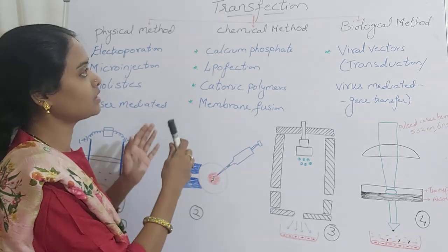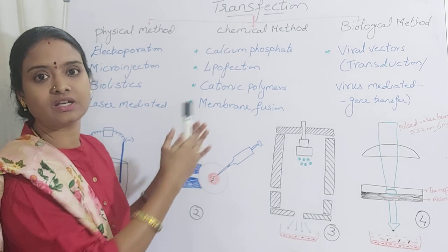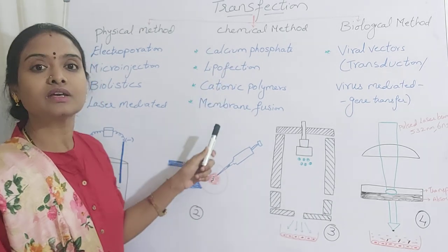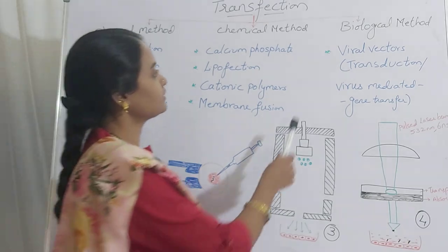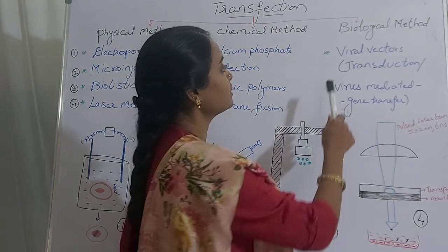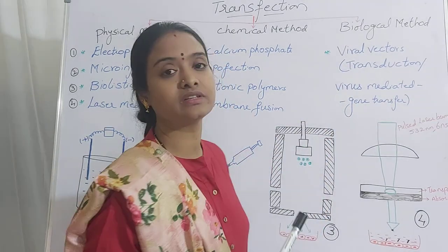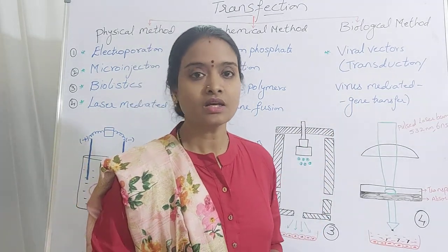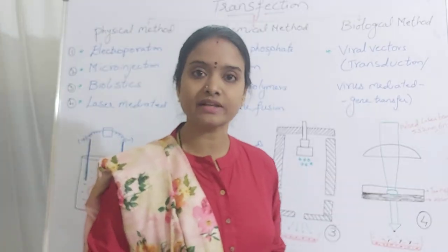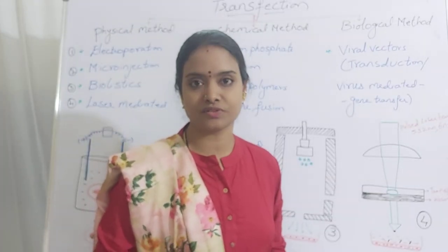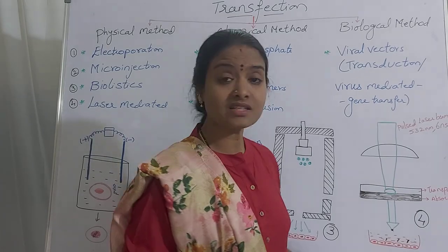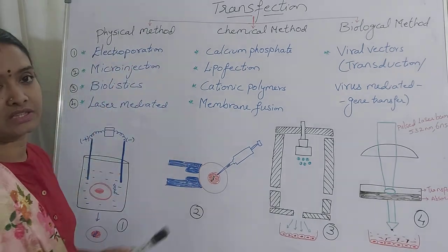In the chemical method, we are not using any vector for introducing the gene of interest; we are using only chemicals. The biological method of gene transfer makes use of only viruses. It is also referred to as transduction, viral mediated gene transfer, or viral mediated transfection. Today we will discuss the physical methods.